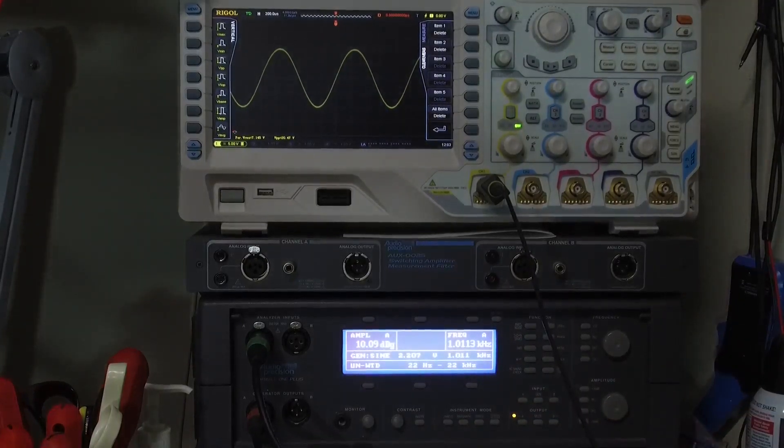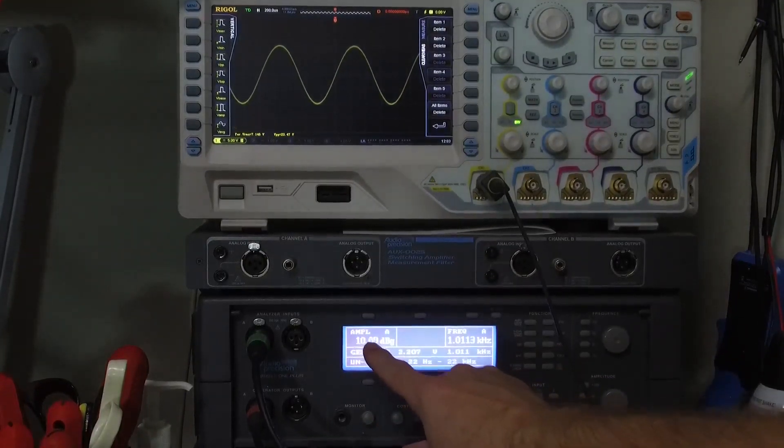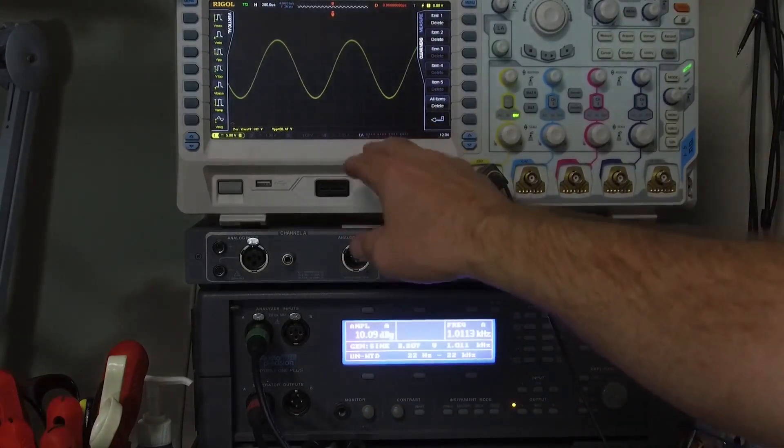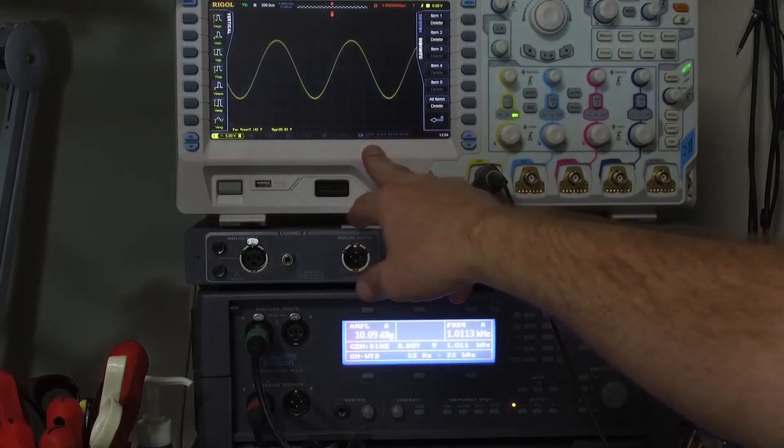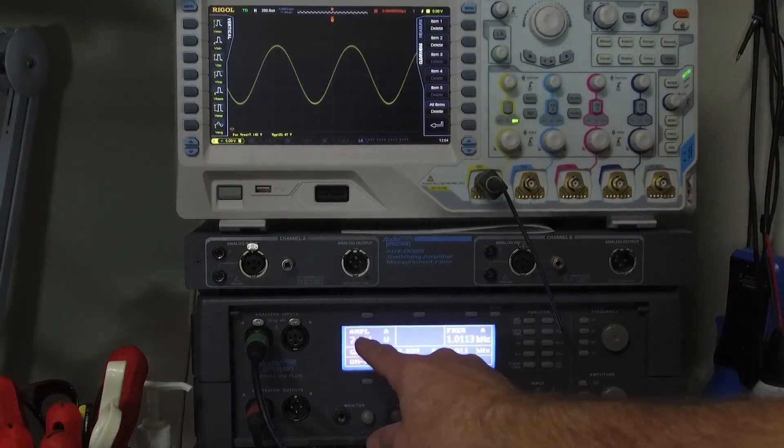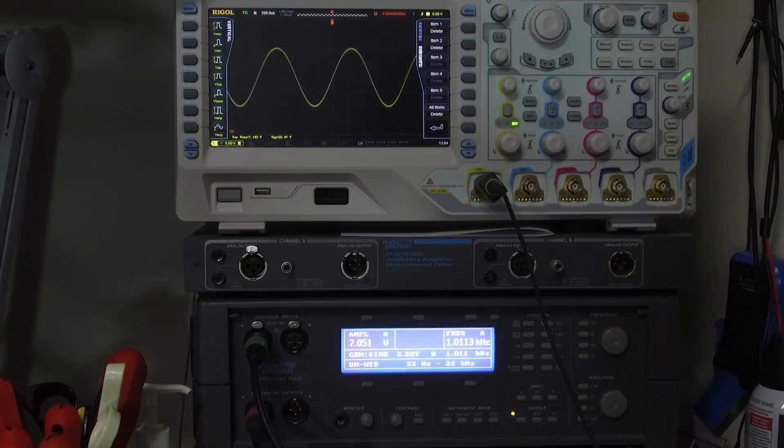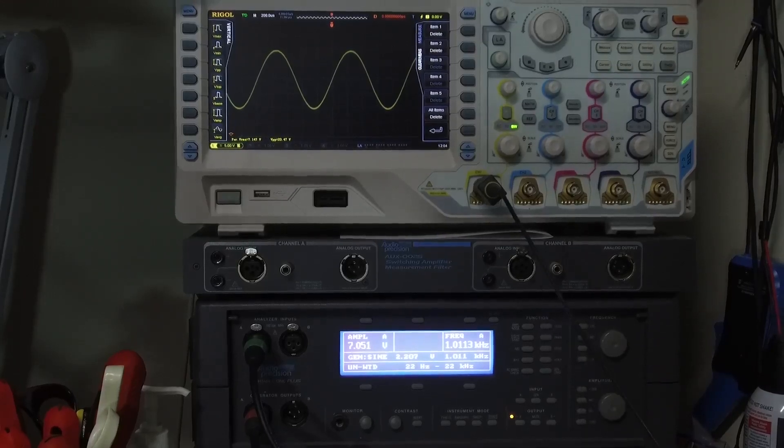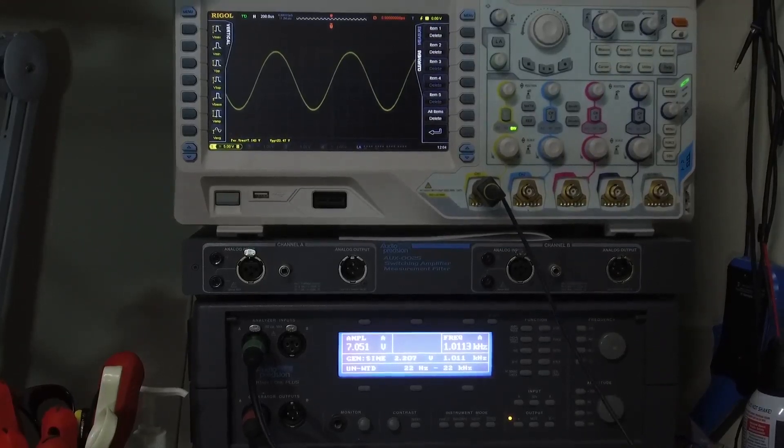So our gain is roughly 10 dB. Our maximum power is going to be this voltage, this 7 volts. Square that, so 49, divide that by 8, 6 watts.